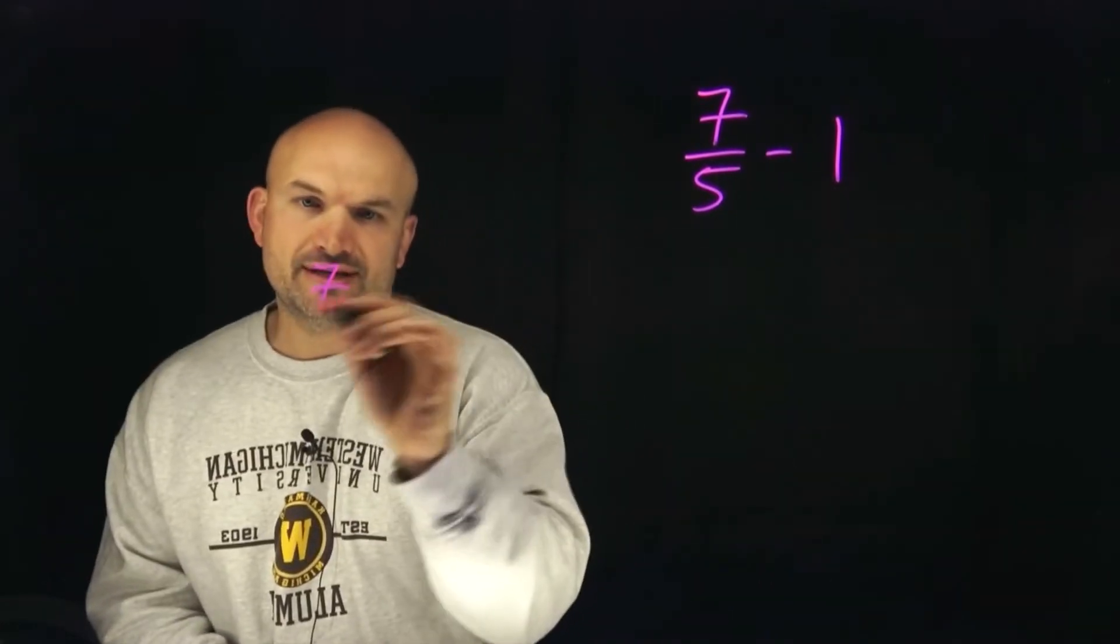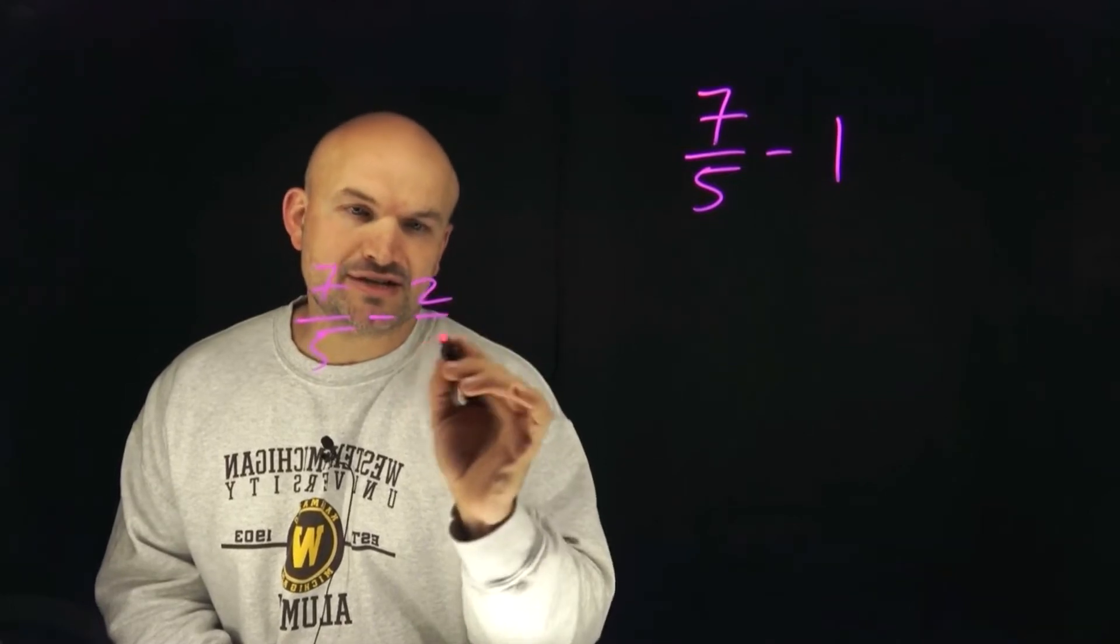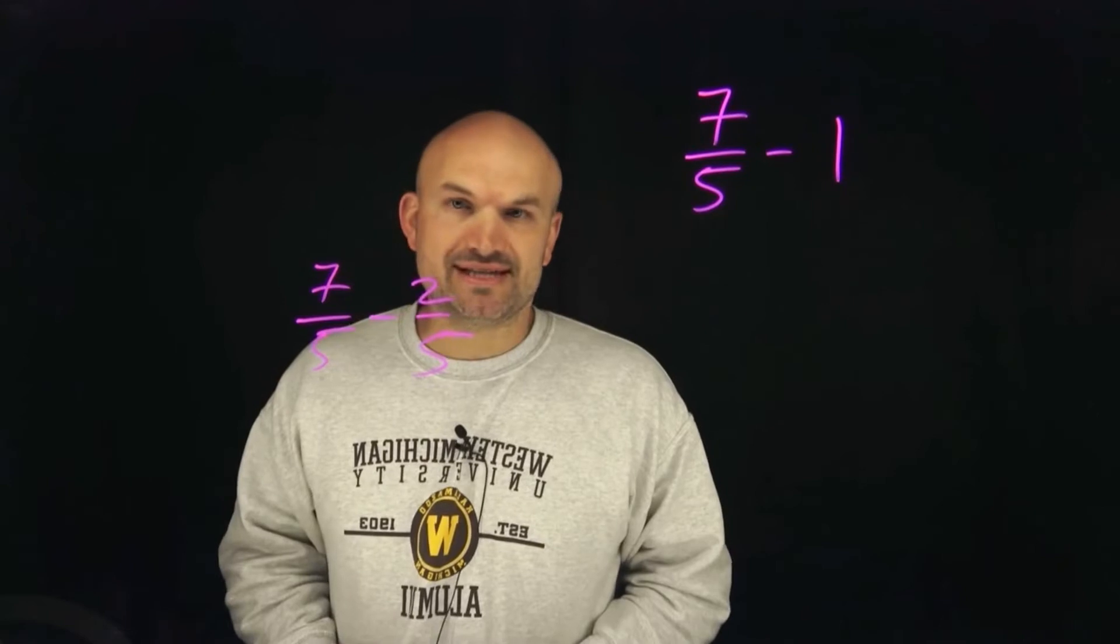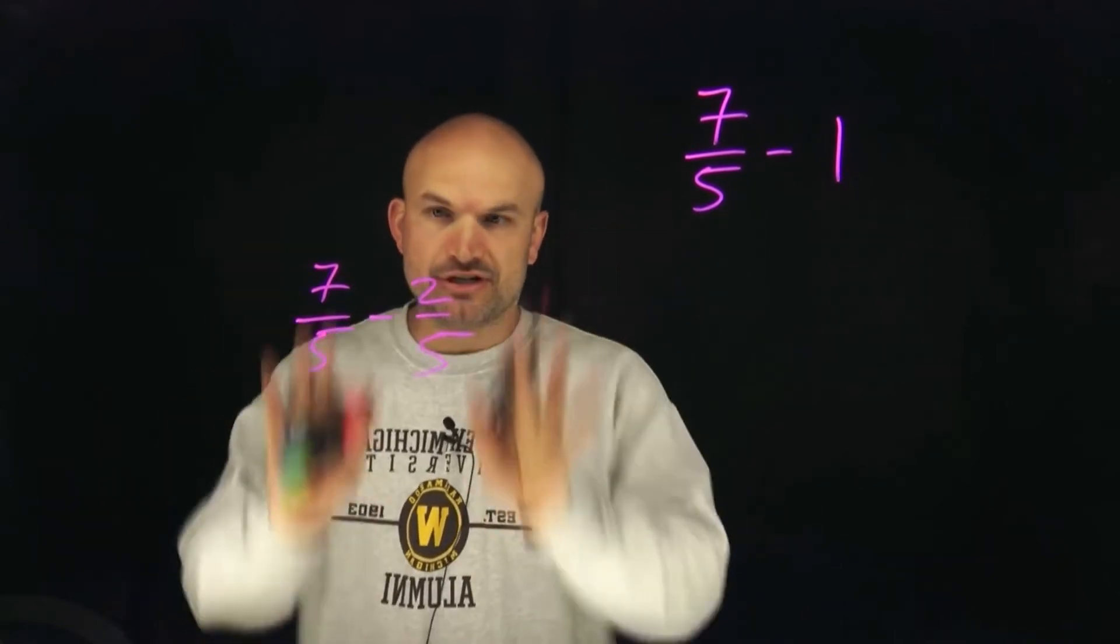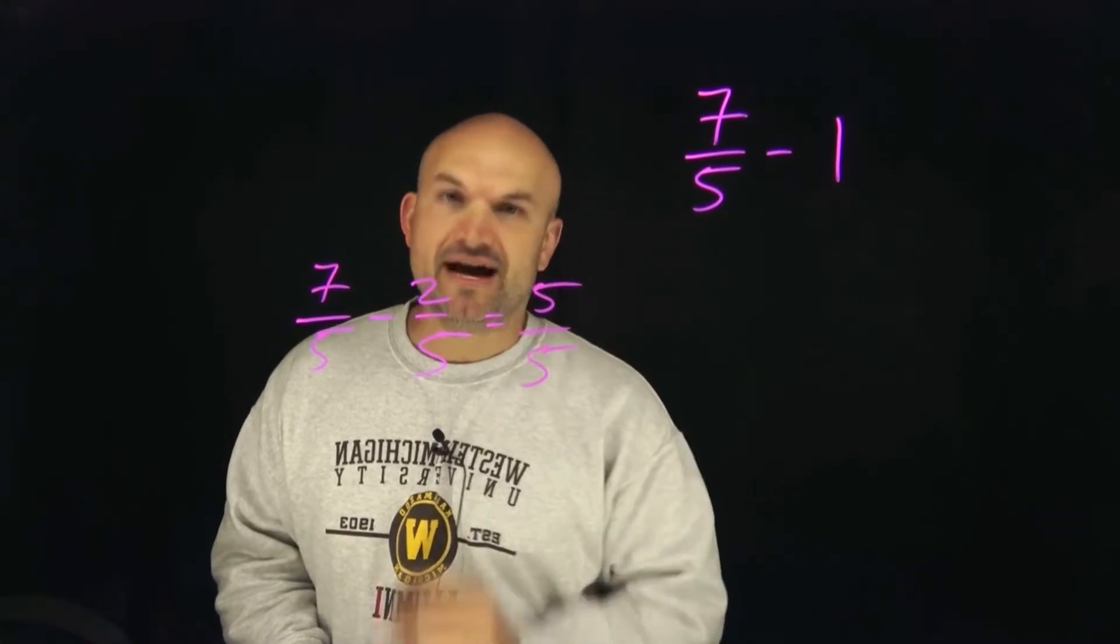So if I was to do, let's say, seven-fifths minus two-fifths, since the denominator is the same, I just apply the operation to the numerator. So seven minus two is now going to give me five over five.